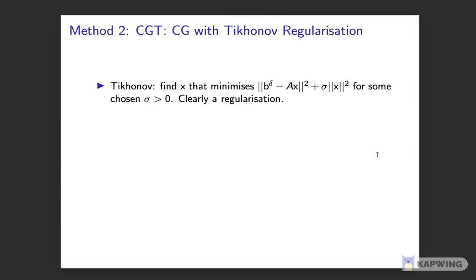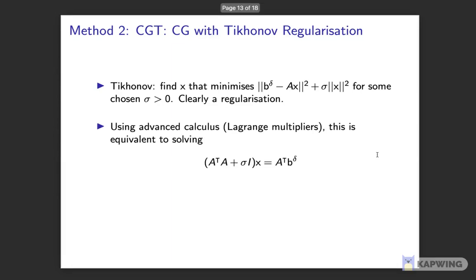It seeks to minimise this expression for some chosen positive sigma. Conveniently, it turns out that we can use Lagrange multipliers to reduce to this problem, which looks very much like the normal equations, just shifted by a constant.